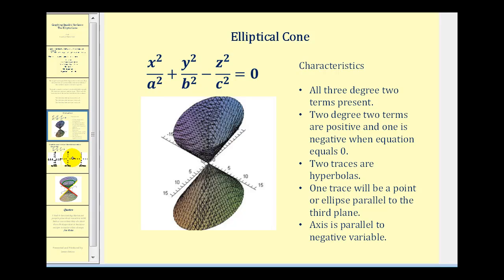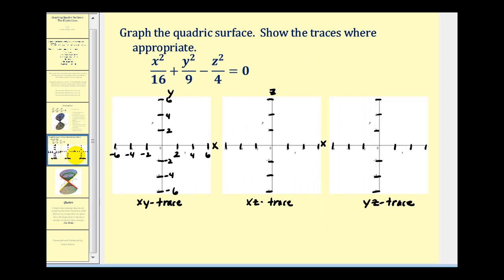Let's go ahead and take a look at an example. Let's determine the three traces of this given quadric surface. Again, notice it does fit the form for an elliptical cone. So to determine the xy trace, we'll set z equal to zero. That's going to give us x squared over sixteen plus y squared over nine equals zero. Now the only solution to this equation would be when x is zero and y is zero, which would be a point at the origin.